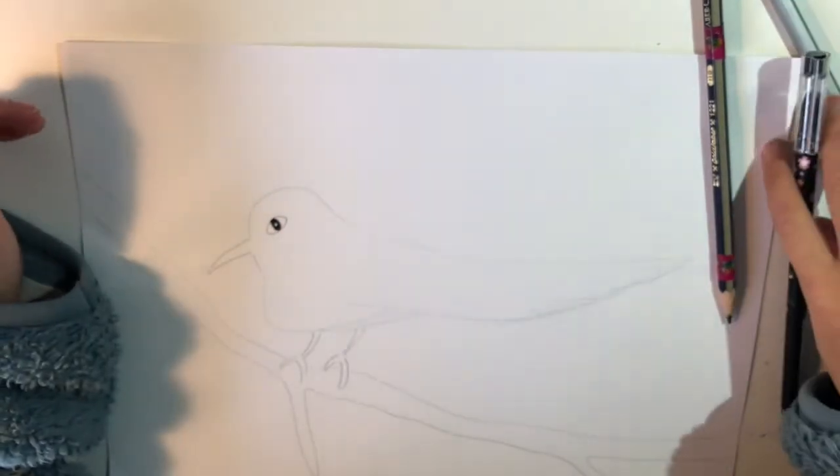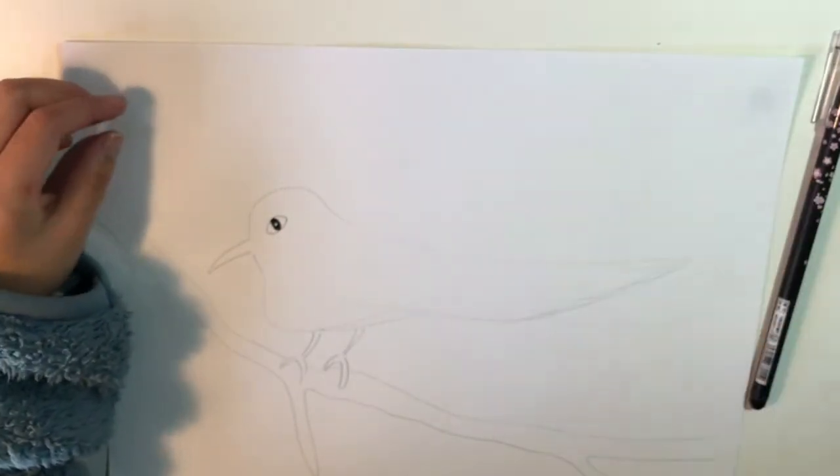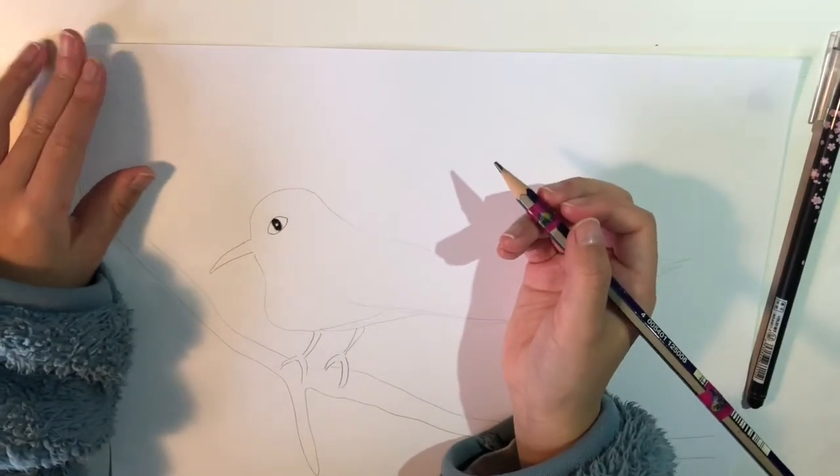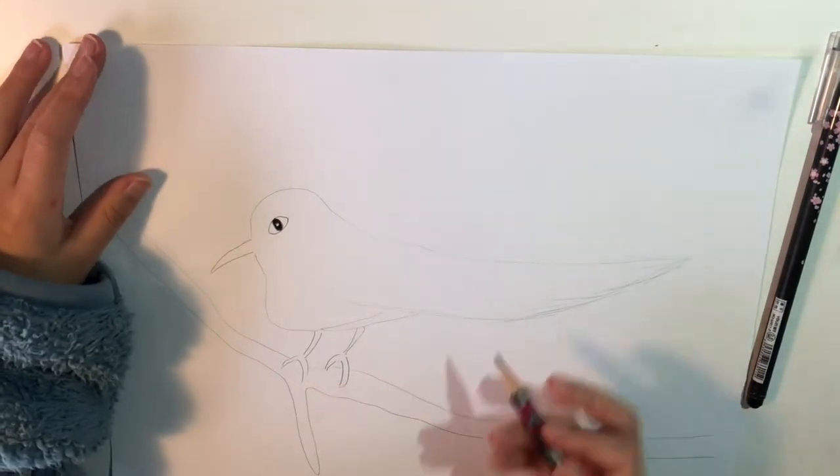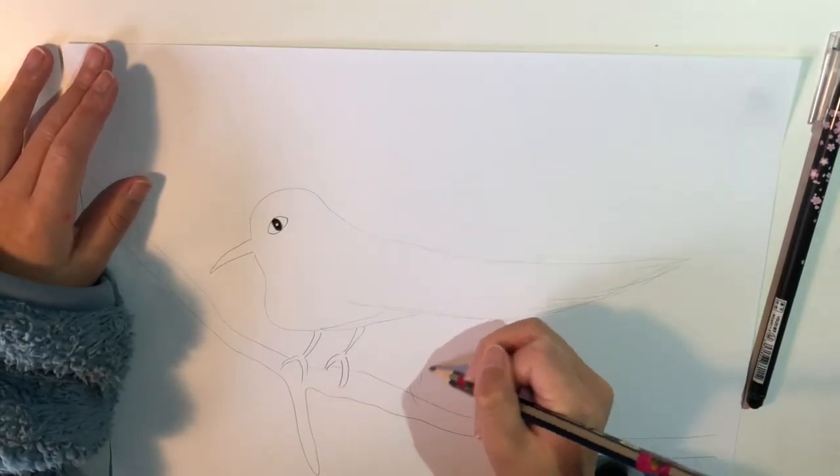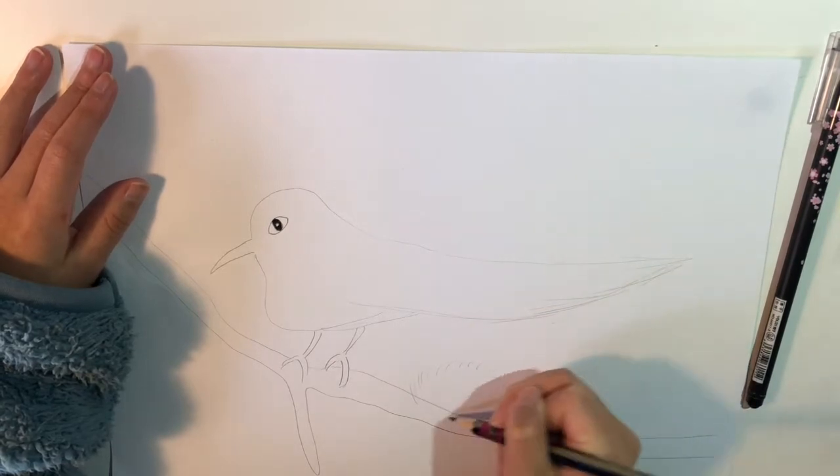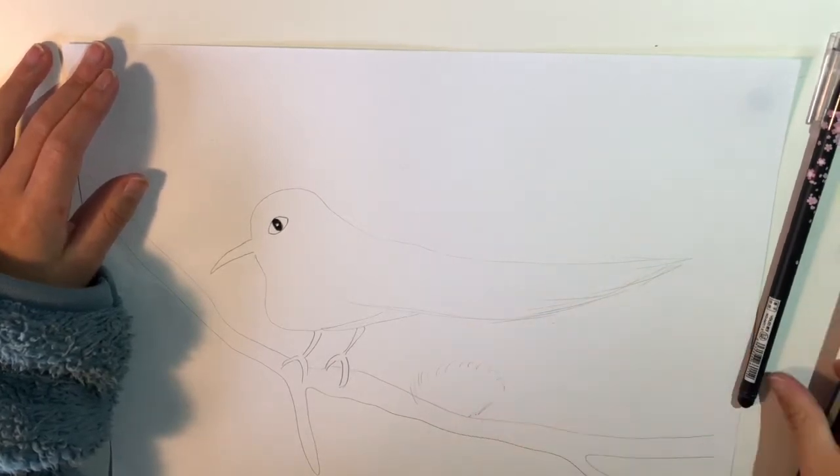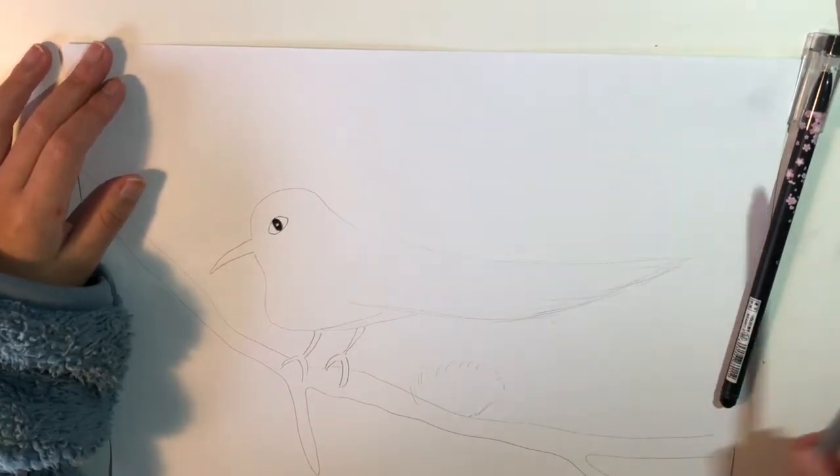Now when we have done the bird, you can add some decorations to it. Now we have added the branch, we can do a nest. So first, do a small nest for the nest, and you can use the brown to color it in.